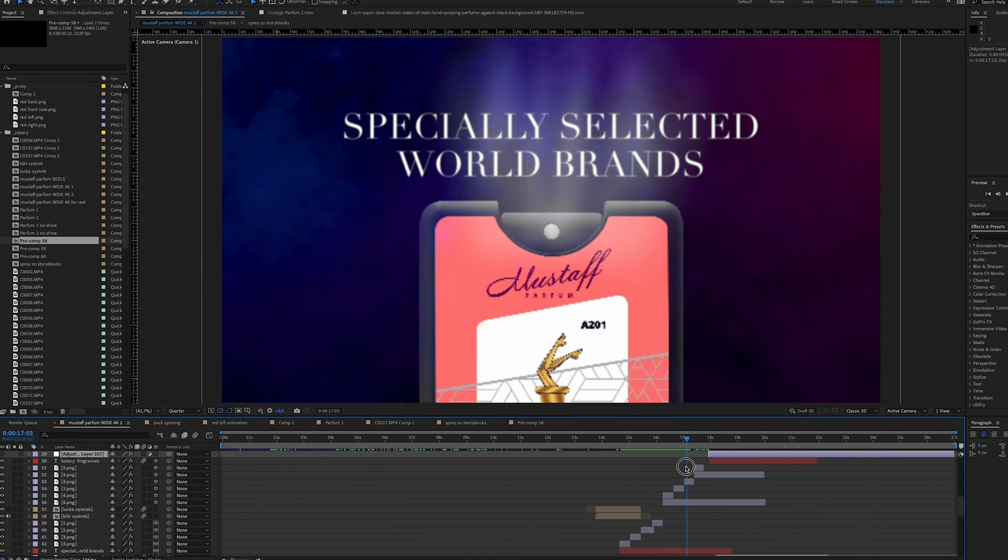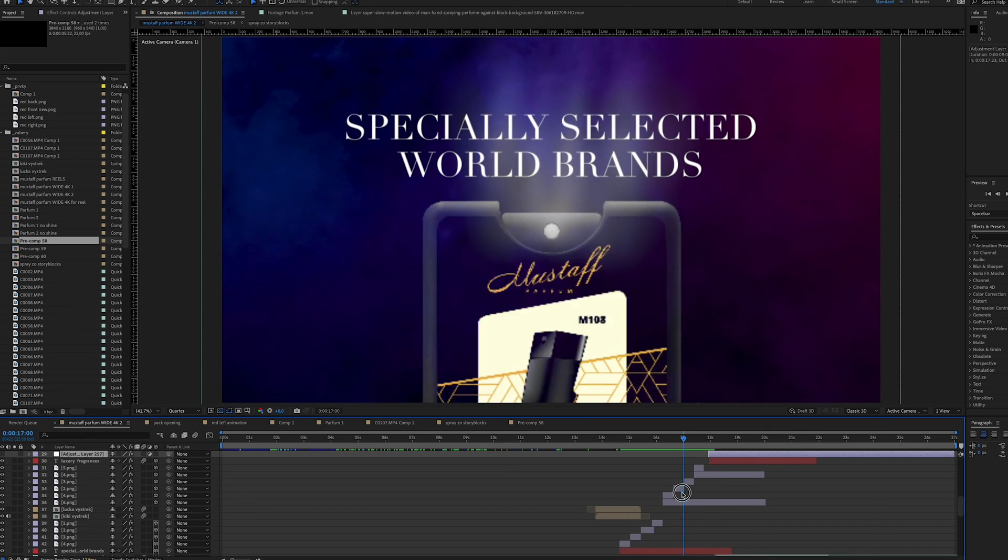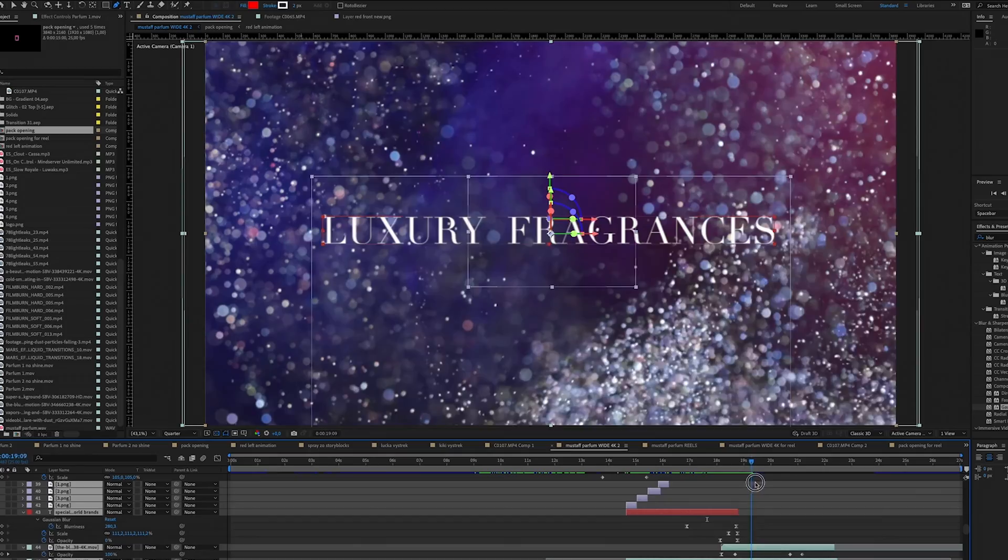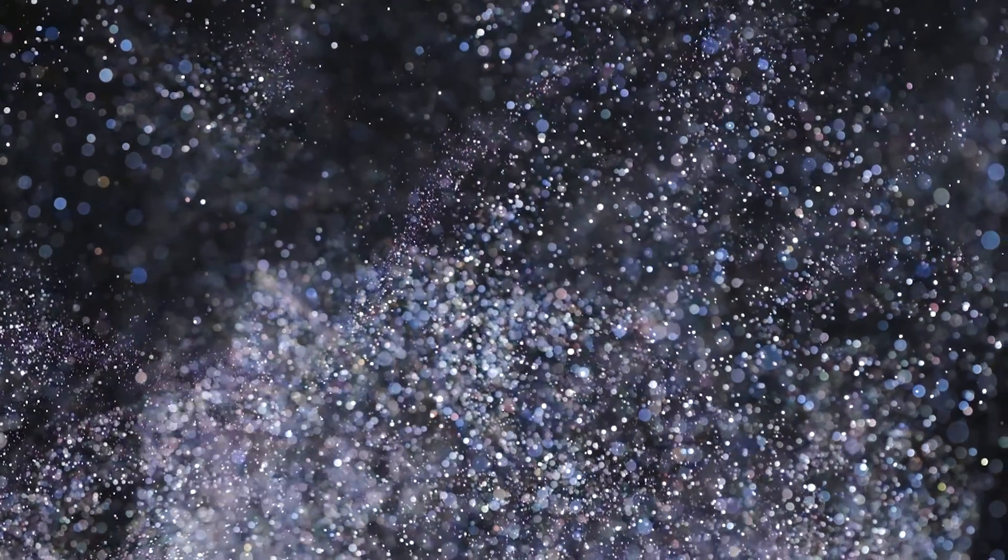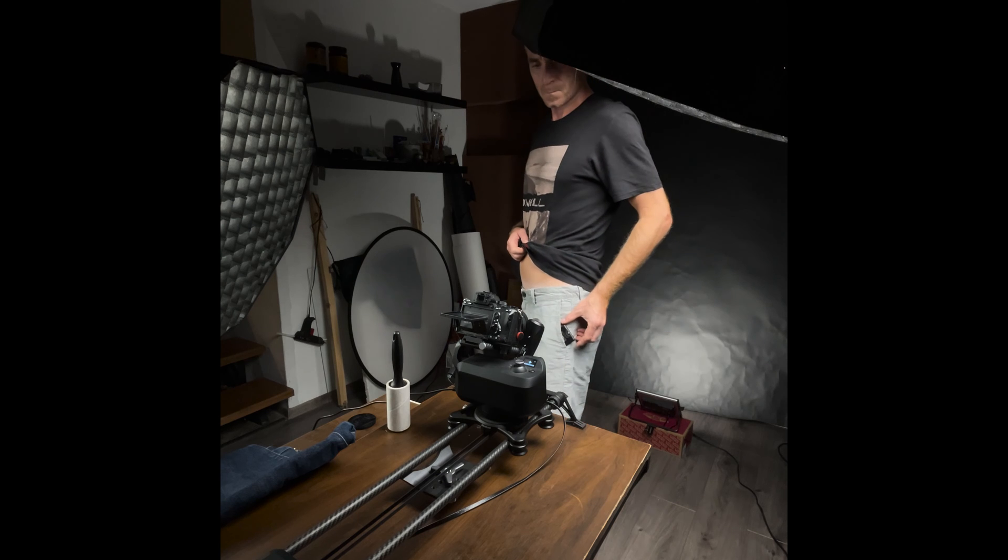Then I place the spray clip which was downloaded from storyblocks.com to the composition and place it to the position where I want it to be. The next clip where the particles are flying in the air was downloaded from storyblocks.com and on the last clip is me pushing the perfume into my pocket.